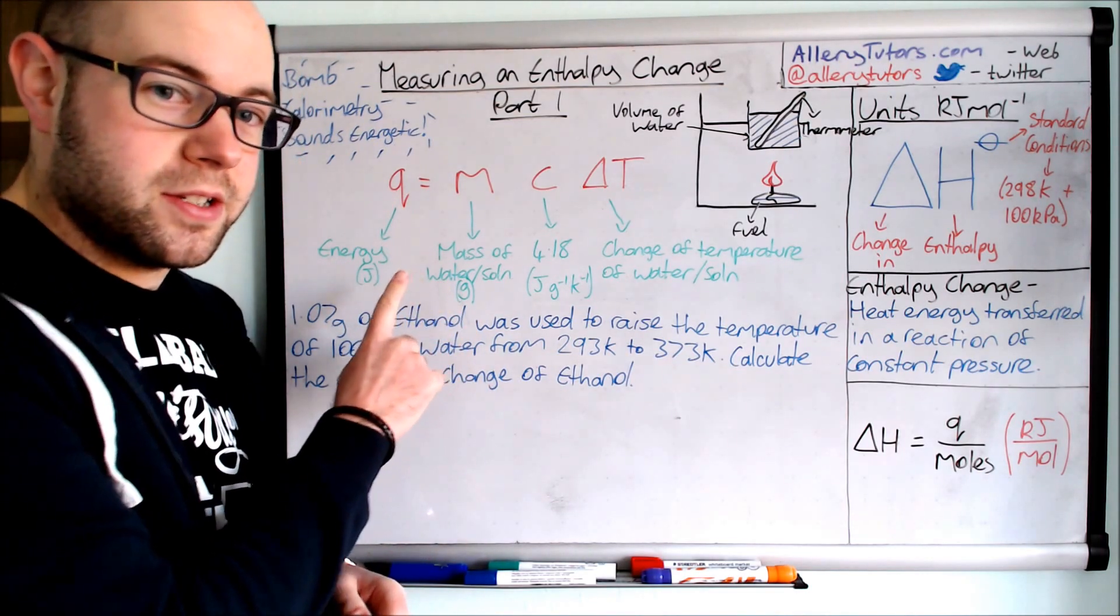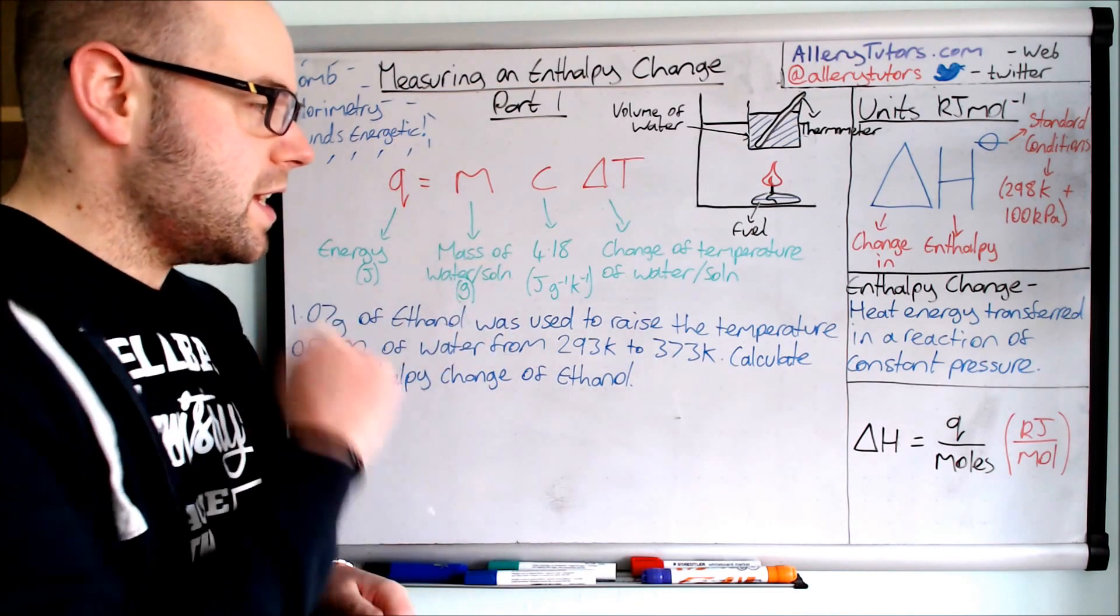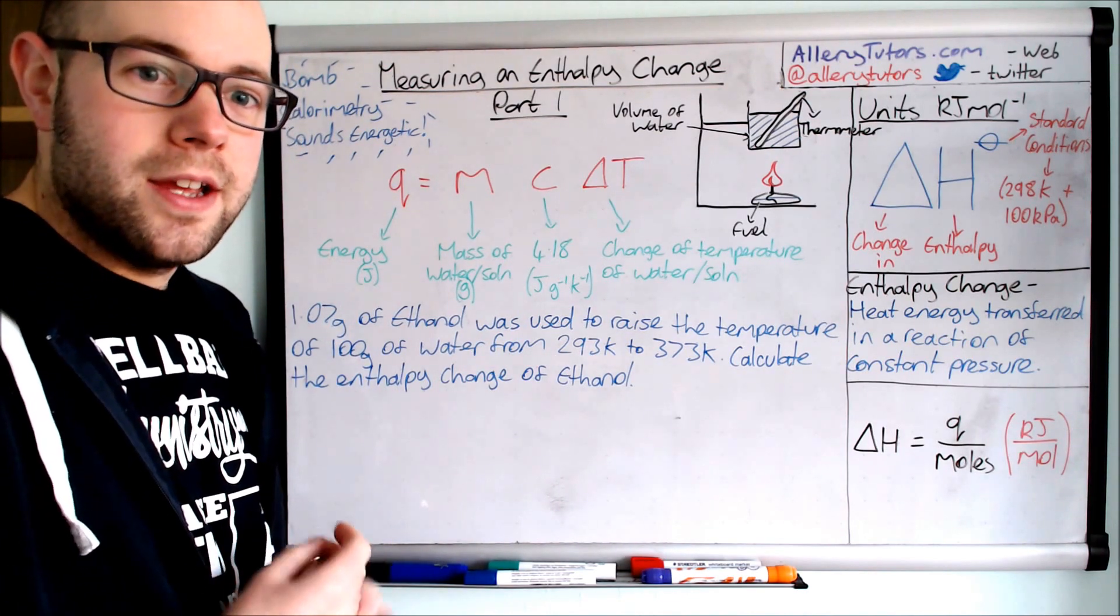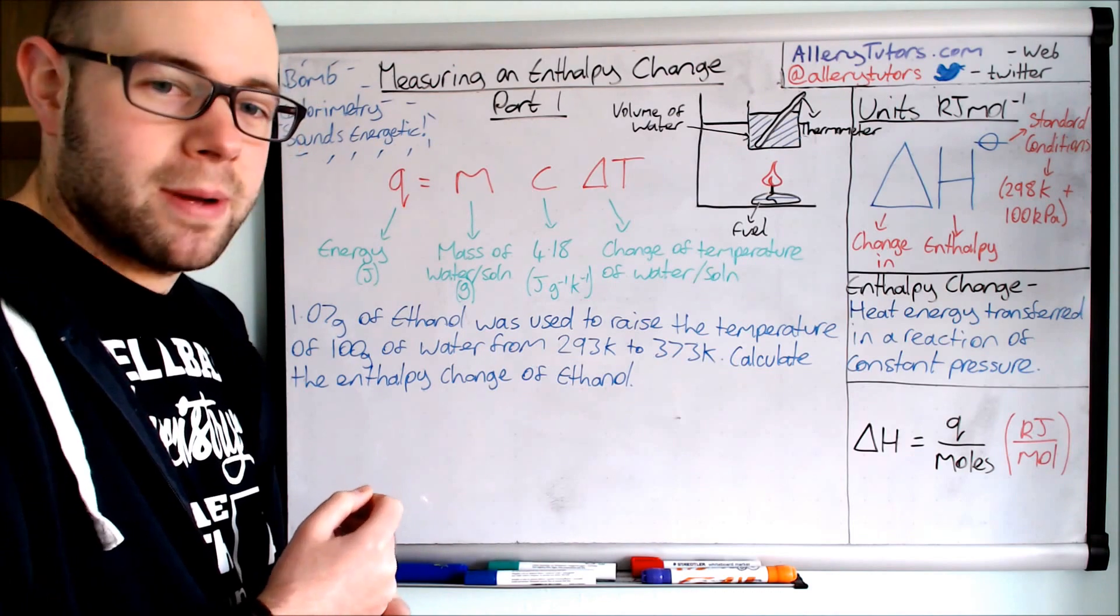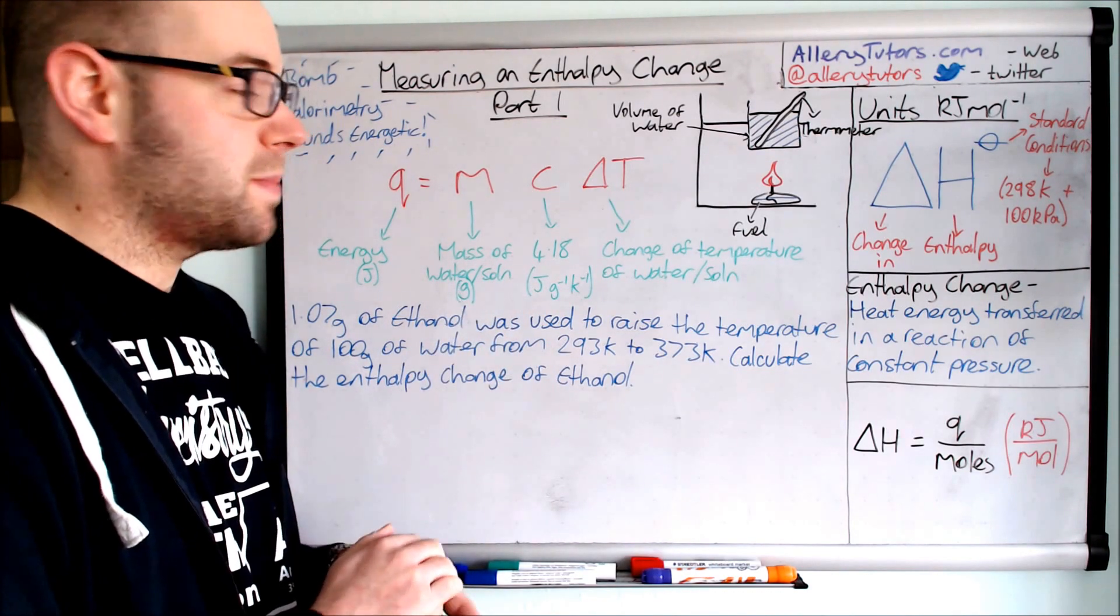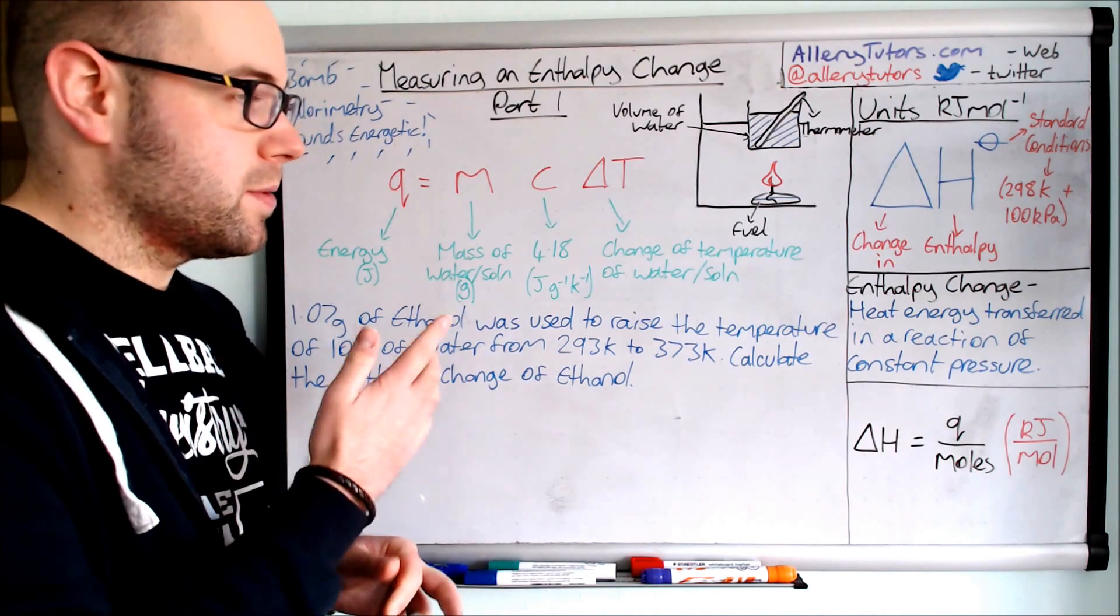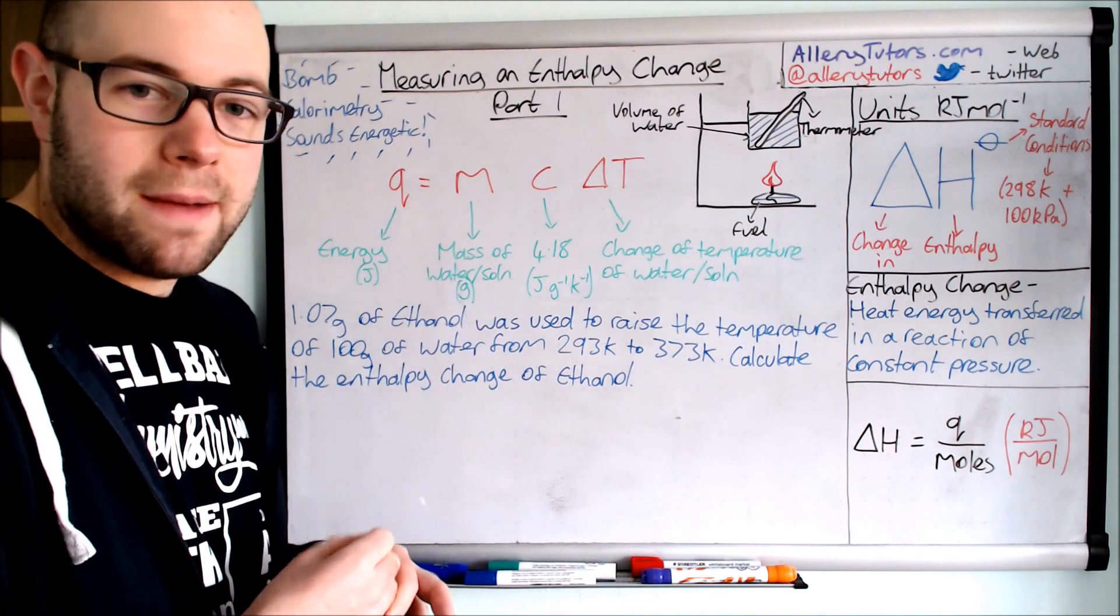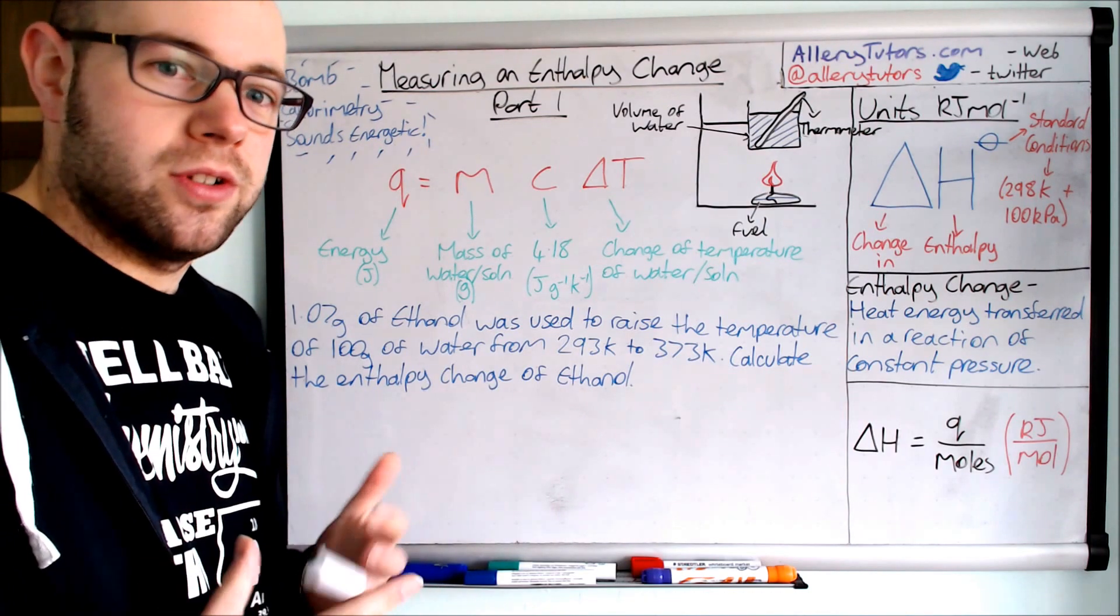c is the heat capacity. This is given a value of 4.18, you'll be given this in the exam so you don't need to remember this. The units are joules per gram per kelvin. The last bit is delta T. Again we know what the delta bit means, delta bit means change, so delta T is the change of temperature of the water or solution that we are actually heating up.